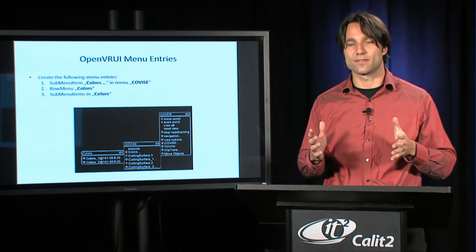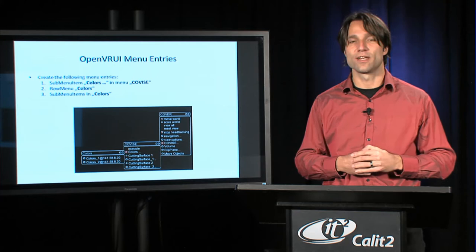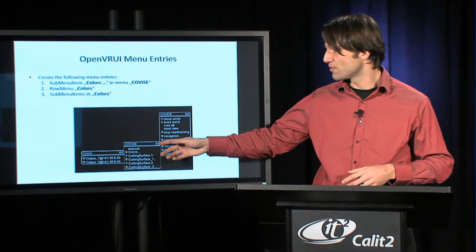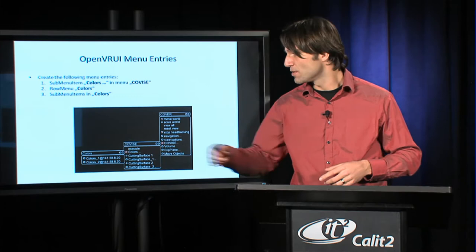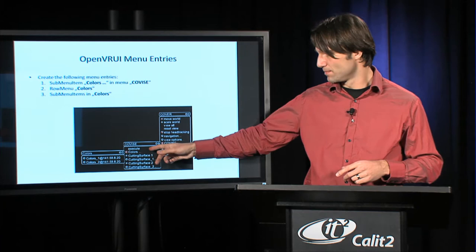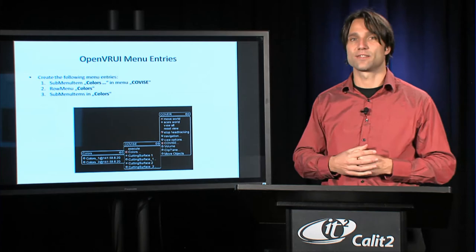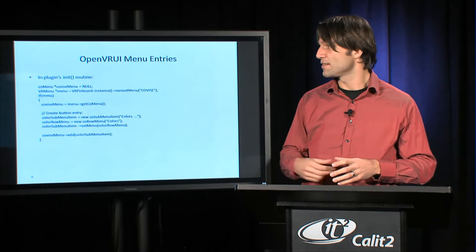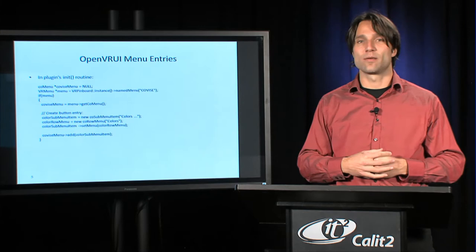We already looked a little bit in an earlier lecture about the menus of OpenCover and what kinds of widgets you can use. Today we want to look at how you can program these Covice menus and the various components. As an example, we're looking at how you would create a submenu off of the Covice menu in which you have two menu items for colors. We'll create a submenu item called colors with three dots, and then create a submenu titled colors with two entries. The code we're going to write is about this long. There's a little bit more to it because we're not including the header file, but it's really not that much.